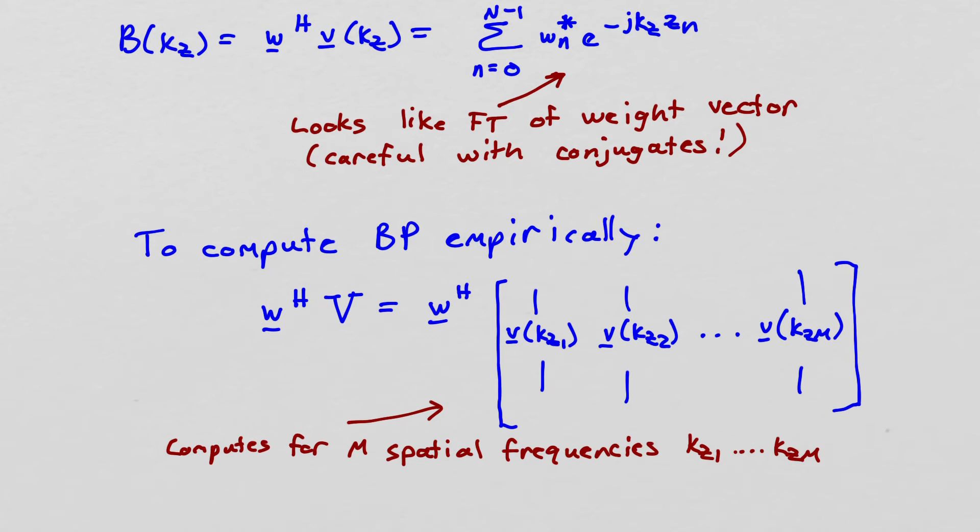So now we can compute the beam pattern empirically by simply we take our single weight vector and then we just multiply by a matrix of different complex exponential replica vectors, right, at different values of spatial frequencies. So I do w Hermitian capital V, where capital V is a matrix. Each column of that matrix contains the replica at a different spatial frequency that I want to calculate the beam pattern for. So this example computes the beam pattern for m different spatial frequencies from kz 1 up to kz m.